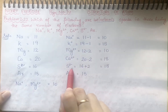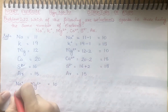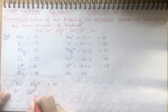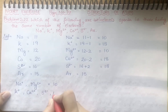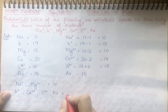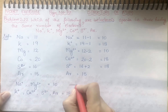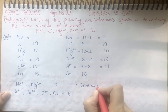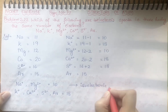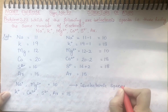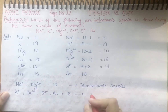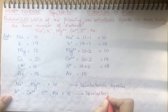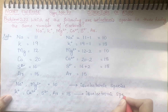So Na⁺ और Mg²⁺ isoelectronic species हैं जिनमें 10 electrons present हैं। और 18 electrons K⁺, Ca²⁺, S²⁻ और Ar में present हैं। So ये चारों species आपस में isoelectronic हैं। हमारे पास दो isoelectronic groups हैं।